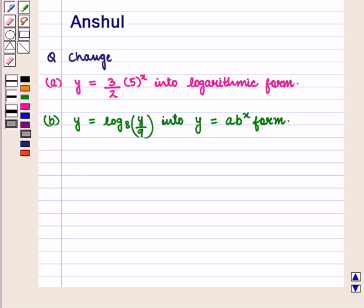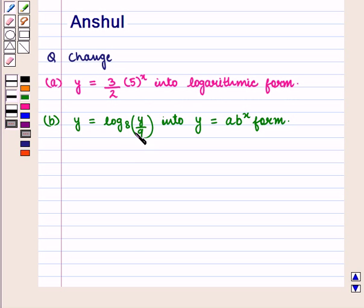Hello and welcome to the session. In this session, we are going to discuss the following question: Part A — change Y is equal to 3 upon 2 into 5 raised to power x into logarithmic form. Part B — Y is equal to log of Y upon 9 to the base 8, change into Y is equal to A into B raised to power x form.